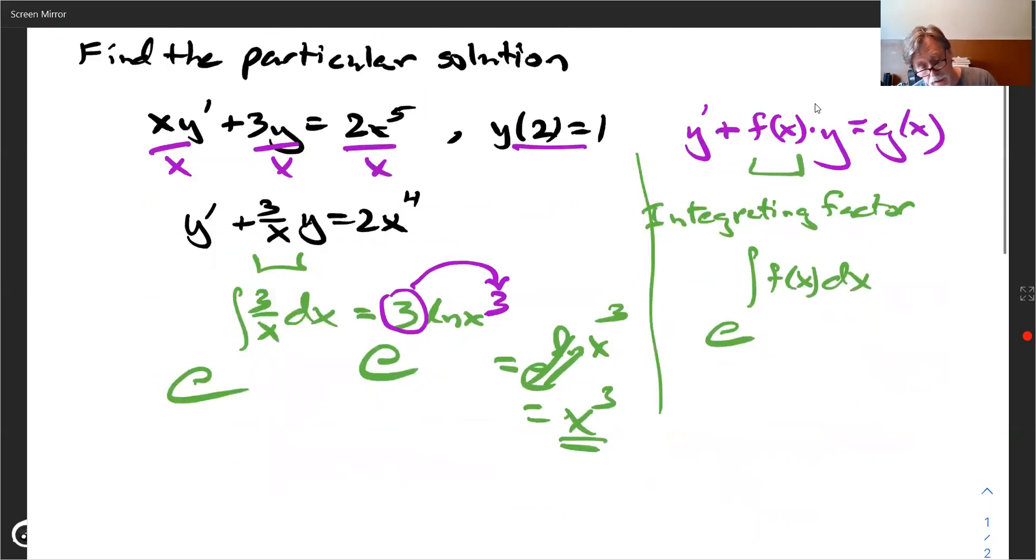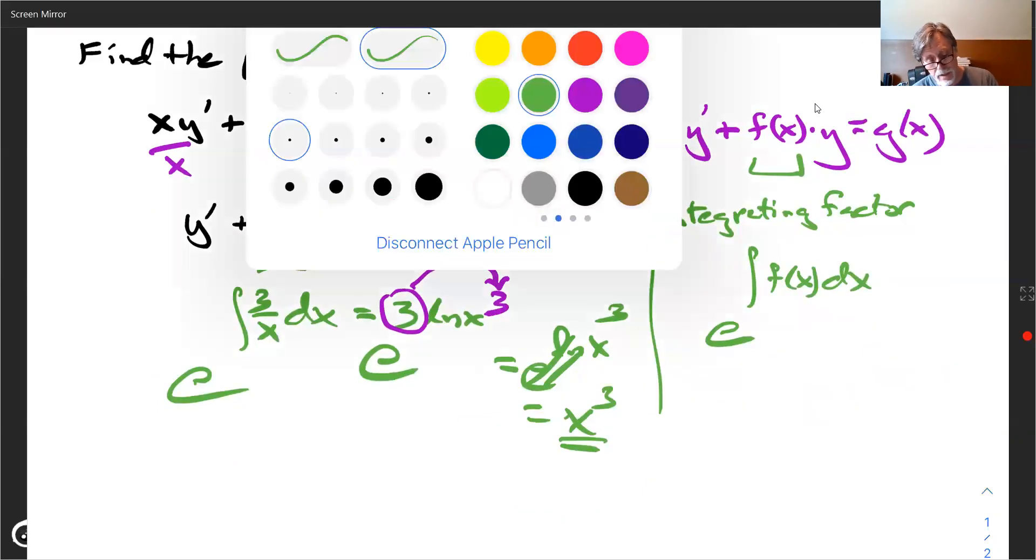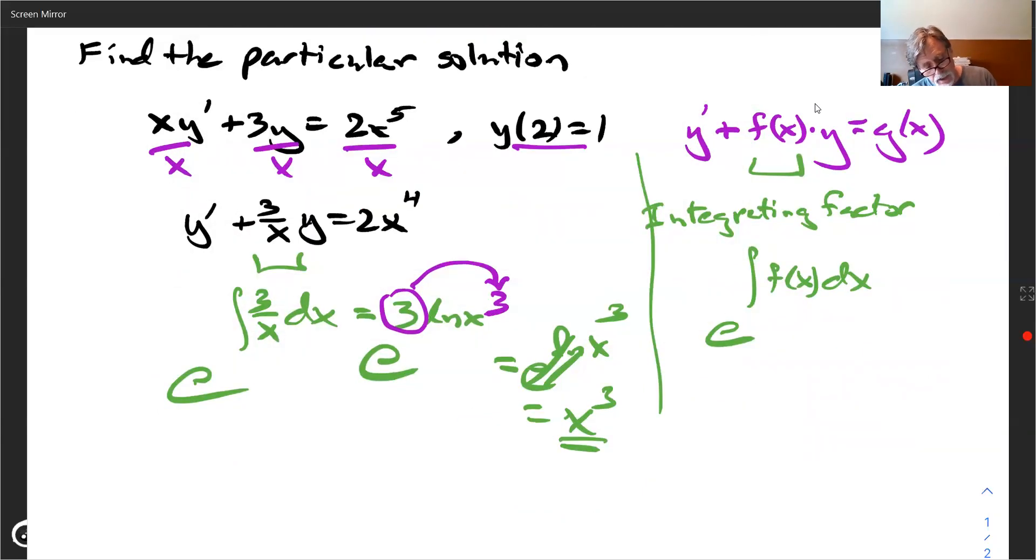So the next step, in case we need, if we're rusty or we've never seen it before, is we take that x cubed and we multiply both sides of the equation, the differential equation by that multiplier, that integrating factor. So we have y prime here and whoops,